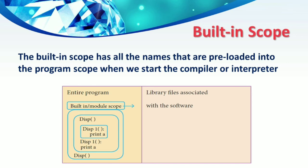Therefore built-in functions come under the built-in scope. For example, the functions `disp`, `disp_on`, and `print a` are all part of the built-in module. These files are associated with the software because they make up the library files. We just import the modules to access these functions. Because of this, they come under built-in scope.